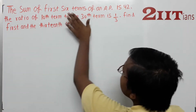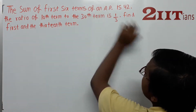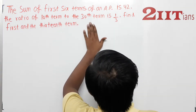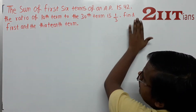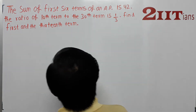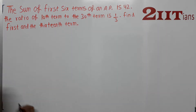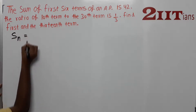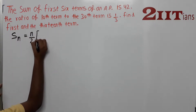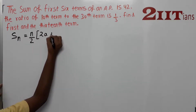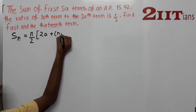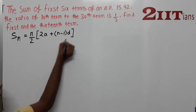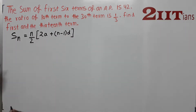The sum of first 6 terms of an AP is 42. The ratio of the 10th term to the 30th term is 1 by 3. Find the first and the 13th term. The basic formula for SN is: SN = N/2 into (2A + (N-1)D), where A is the first term and D is the common difference.